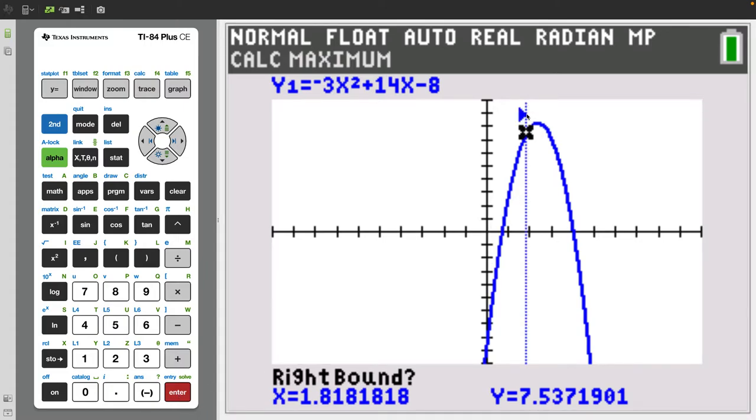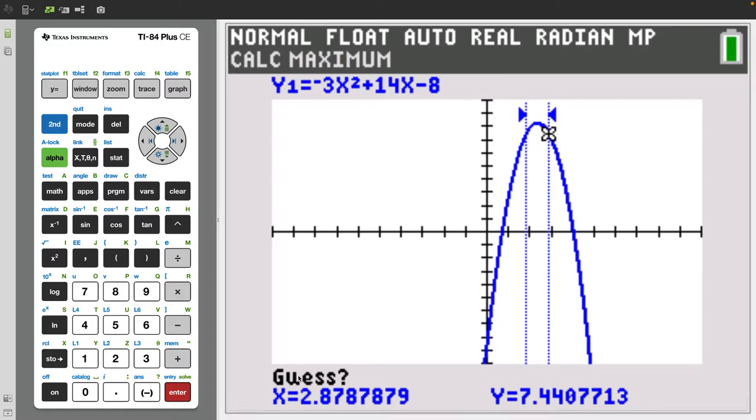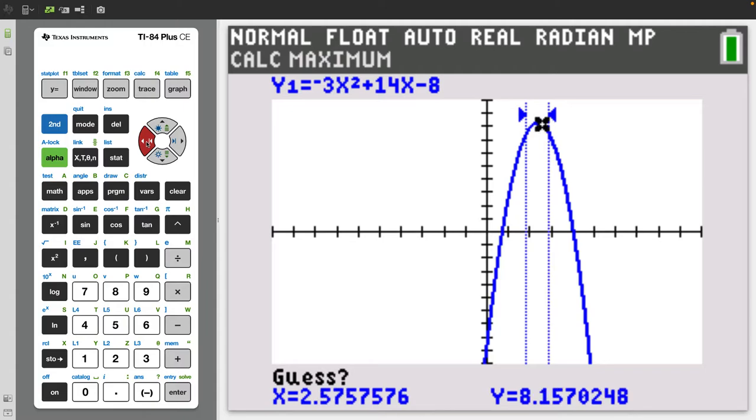So this tells the calculator hey look for an x value or for a y value somewhere between this number. And now it's asking us for a right bound. So again we use the right arrow key to move further to the right. You want to make sure that you're over the maximum or the minimum whichever one you're identifying and then press enter again. And now it's going to ask you hey give me a guess so that it doesn't have to work too much. So then you go to roughly where the max is. It doesn't have to be precisely where the max is but you're just telling it hey it's probably somewhere close here.